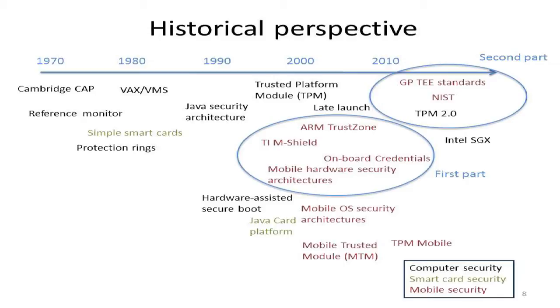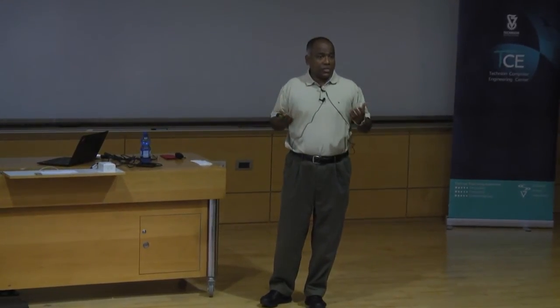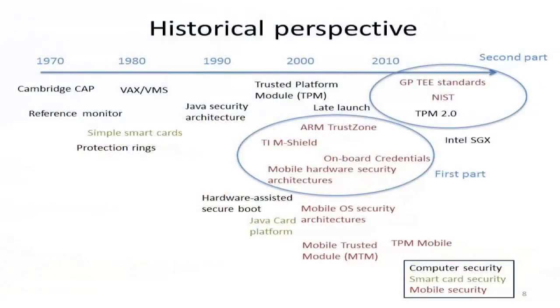For example, every software platform security architecture — Android, Windows Phone, iOS — has the idea of giving rights to applications based on permissions. That goes back to the VAX/VMS days where different users were granted different privileges. There was ordinary computer security going back to the 1970s, but new developments continue: TPN 2.0 coming up in the second lecture, and Intel's new trusted execution environment architecture called SGX.